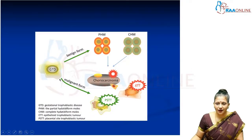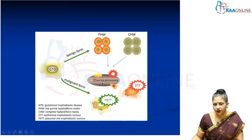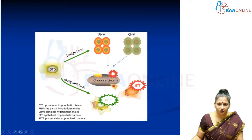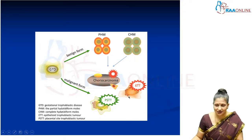The benign form of gestational trophoblastic disease includes partial and complete hydatidiform mole. The malignant form includes metastatic and non-metastatic types. The metastatic one is called choriocarcinoma, and the non-metastatic ones are the placental site trophoblastic tumor and the epithelioid trophoblastic tumor. These will be discussed in subsequent slides.